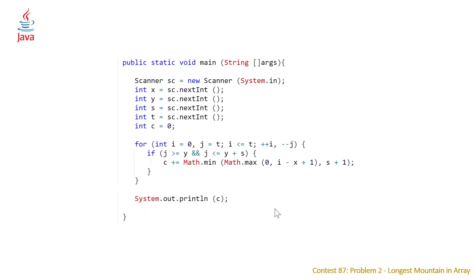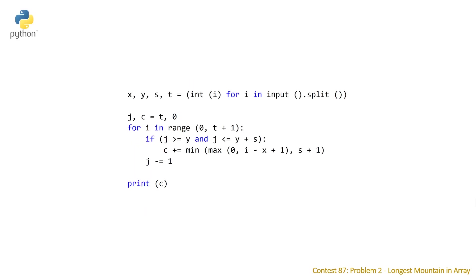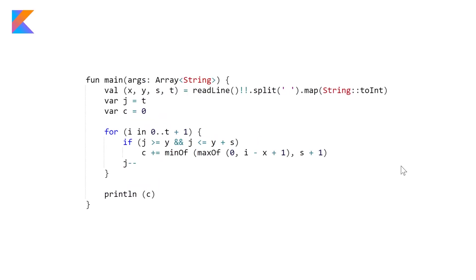Then on the final line you're just outputting c again. Moving on to our Python solution, this is probably the most terse solution of all of them. Reading in our x, y, s, and t on the first line, then setting our j outside our loop and also setting c which is the count of the number of positions our frog can get to. Then we have our for loop, our if condition, and then our plus equals to c using the min and max functions, and also at the tail end of each iteration making sure that we decrement our value j.